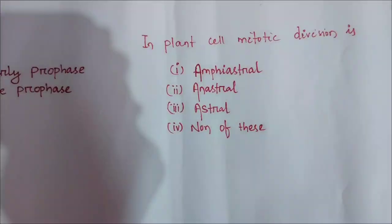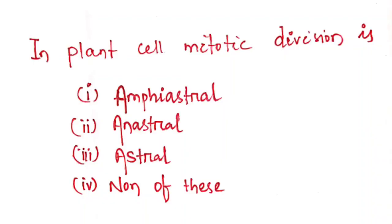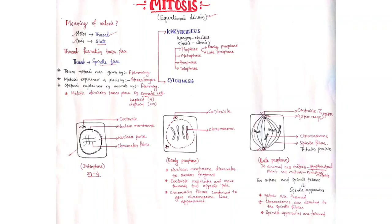In plant cells, mitotic division is: option 1 amphiastral, option 2 anastral, option 3 astral, option 4 none of these. Dear student, please give the correct answer after watching the full video. If you are not able to give the answer, I will give it in the next video. These are all about the interphase and prophase stages of mitosis. In the next video, we will discuss the remaining phases of mitosis.